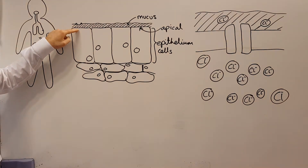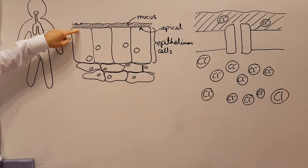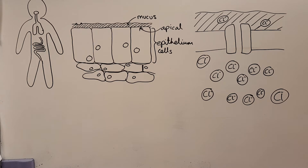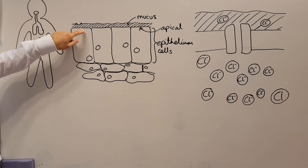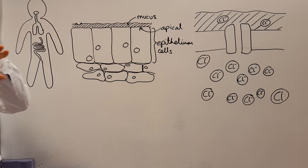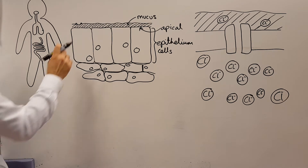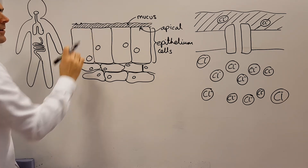This black line represents the edge of the cell. It represents a specific structure — the cell membrane. The cell membrane is made up of two layers of phospholipids with proteins embedded in them. This membrane at the apical end we would call the apical membrane.